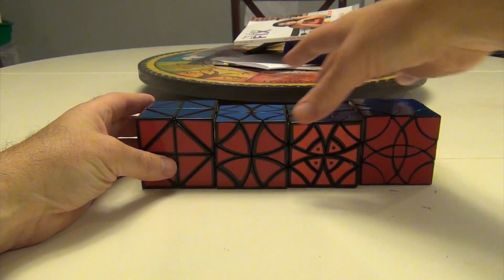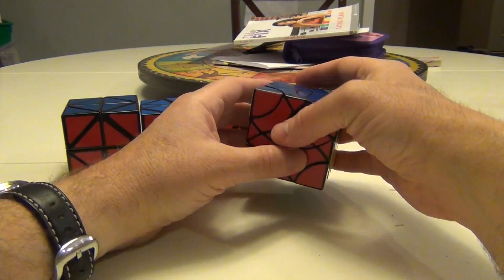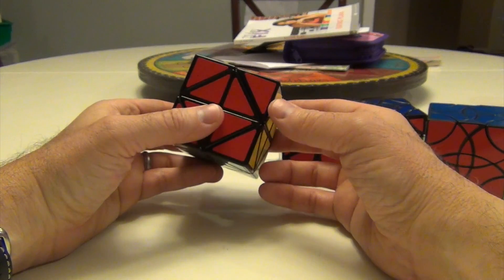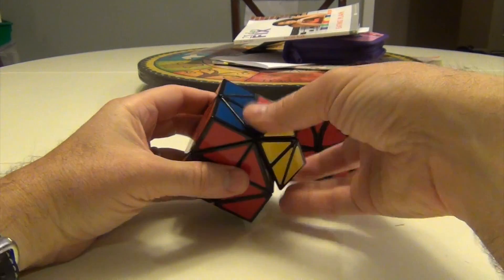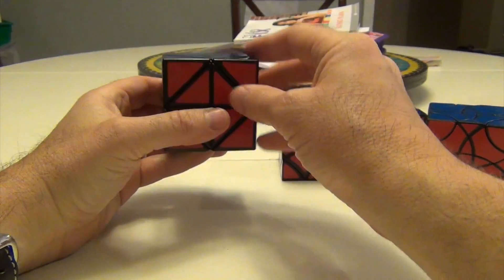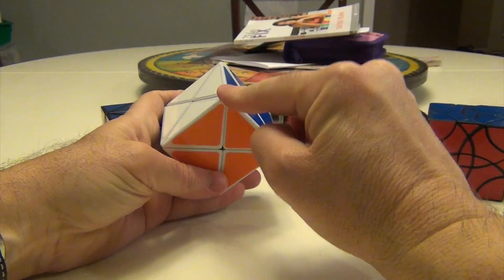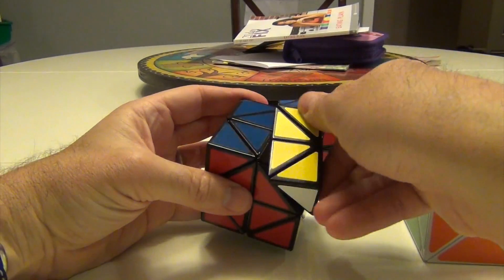So the thing about copters, and eventually we're going to go to looking at this Curvy Copter 3, but just to kind of get a perspective on things, when initially introducing what a copter is, it's a purely edge-turning puzzle. So instead of turning on the face like a Rubik's Cube, or turning on the corner like a Dino Cube, this turns on the edge.